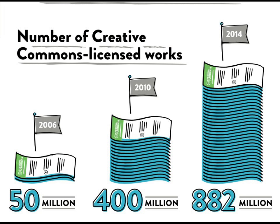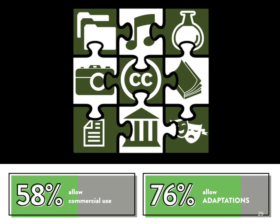In our 2014 State of the Commons report, we got data from platforms and search engines and found there were at least 882 million Creative Commons licensed works out there — videos, images, scientific data, reports. We found that 58% allowed commercial use, and the trend since 2001 is that more and more people are allowing commercial use of their works. Even more people — 76% — are allowing adaptations, so Creative Commons is really facilitating people to collaborate and remix and build on each other's works.